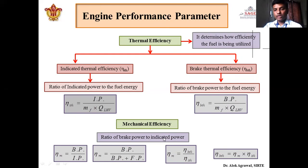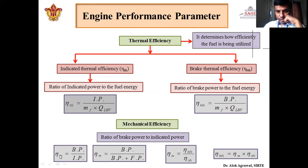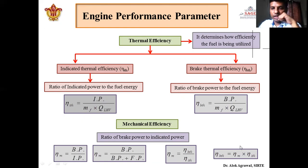Mechanical efficiency is the ratio of brake power to indicated power. Since there are mechanical losses when indicated power is transmitted to brake power, it is called mechanical efficiency. Since indicated power equals brake power plus frictional power, mechanical efficiency can be written as brake power divided by (brake power plus frictional power). Also, mechanical efficiency equals brake thermal efficiency divided by indicated thermal efficiency, because the denominators cancel out. This relationship is very helpful in numerical problems.